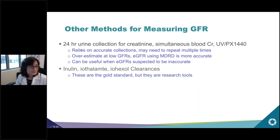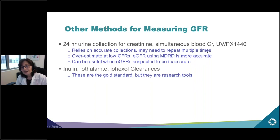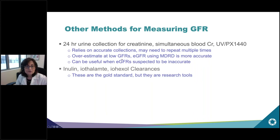Creatinine clearance on 24-hour urines can overestimate the glomerular filtration rate at low GFRs, but it can be useful when the estimated GFR is suspected to be inaccurate. Inulin, iothalamate, or iohexol clearances are the gold standard — very accurate measures of the glomerular filtration rate — but they are four-to-five-hour tests and cannot practically be used in clinical care, though they are used in research protocols.